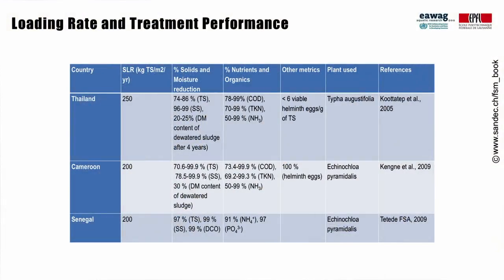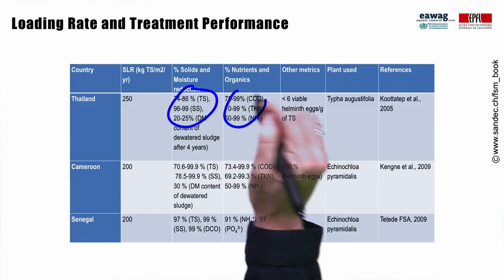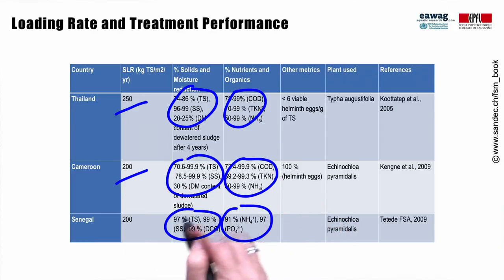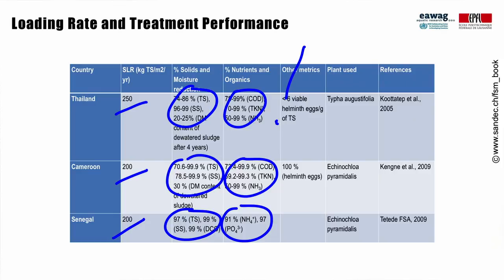This table from the Fecal Sludge Management Book summarizes observed treatment performances with loading rates. Percent removals — meaning what percent stays with the sludge layer versus the leachate — are quite high. But what is important to remember is that starting with very high concentrations found in fecal sludge, you still end up with concentrations in the leachate that are higher than discharge standards. Ways to treat dewatering liquid from sludge are discussed in co-treatment and leachate treatment modules.